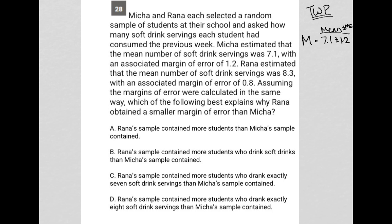Rana estimated that the mean number of soft drink servings was 8.3 — so R for Rana was 8.3, with an associated margin of error of 0.8, so plus or minus 0.8. Notice how I'm writing and reading at the same time, making sure I understand before moving on.